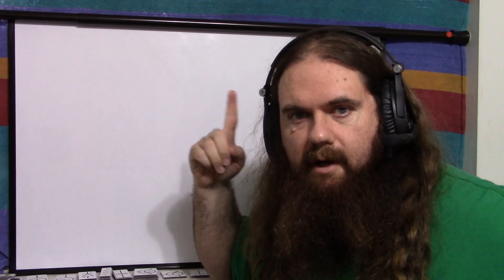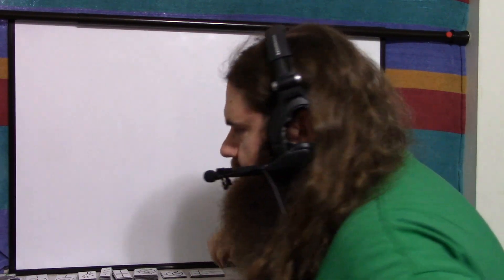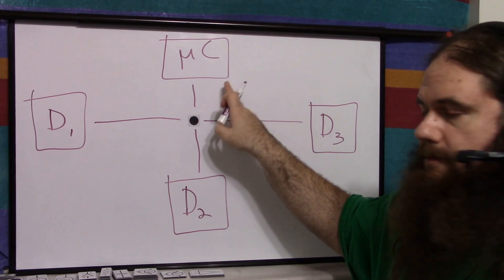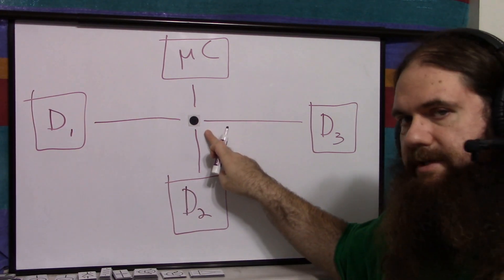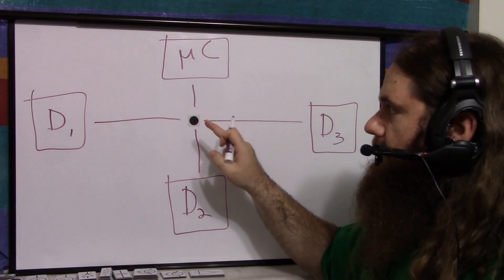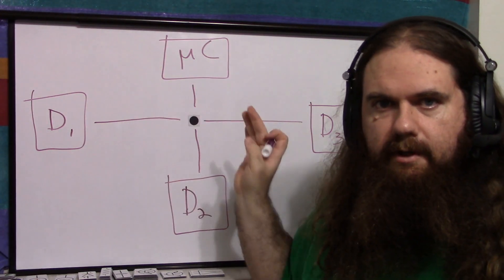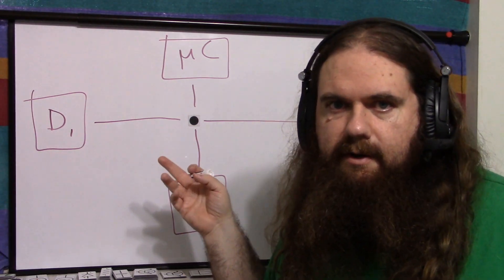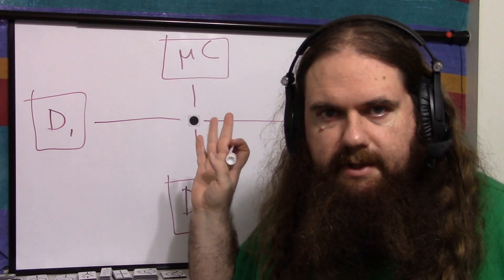If I use a single wire — a one-bit bus — as an example, it could look something like this: with a microcontroller, one of its pins, and one pin on each of three different devices, all shorted together. The microcontroller would have signal lines going to the devices to tell which one to turn on and off, using decoders, muxes, whatever.